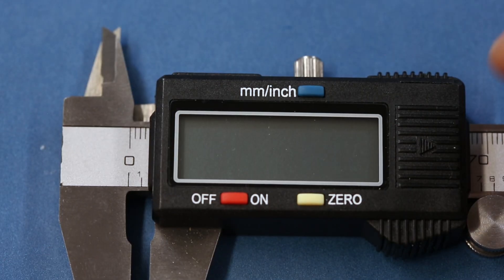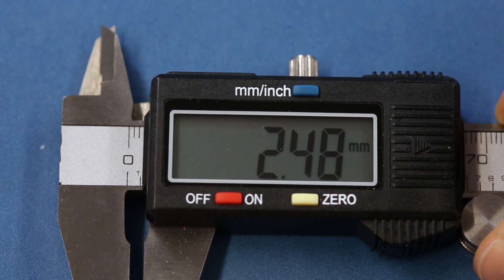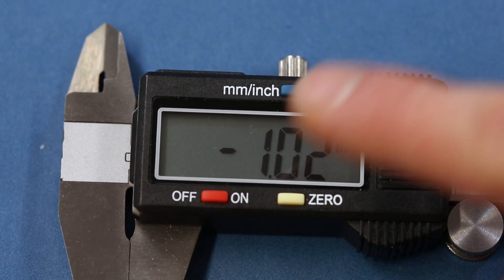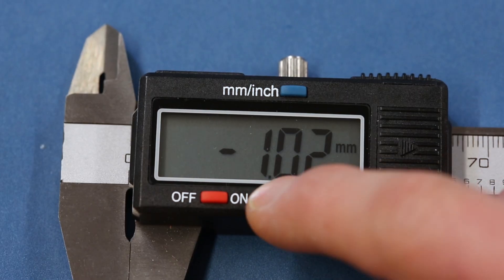For digital calipers, once again, make sure the jaws are completely closed. If you don't see zero on the display, press the zero button.